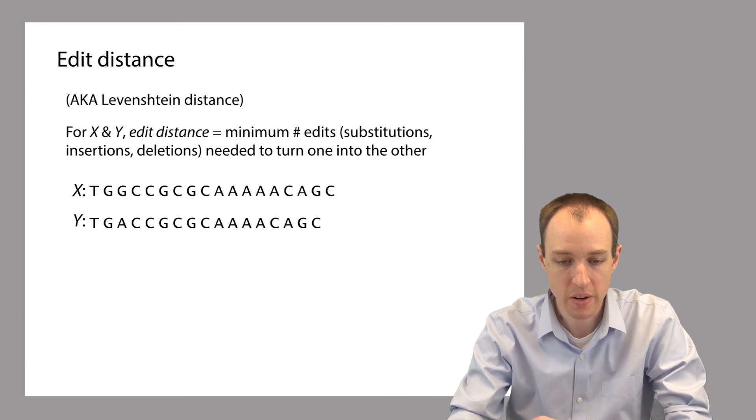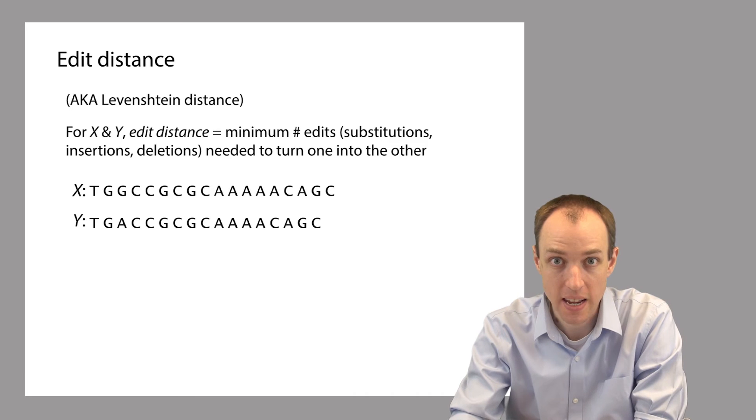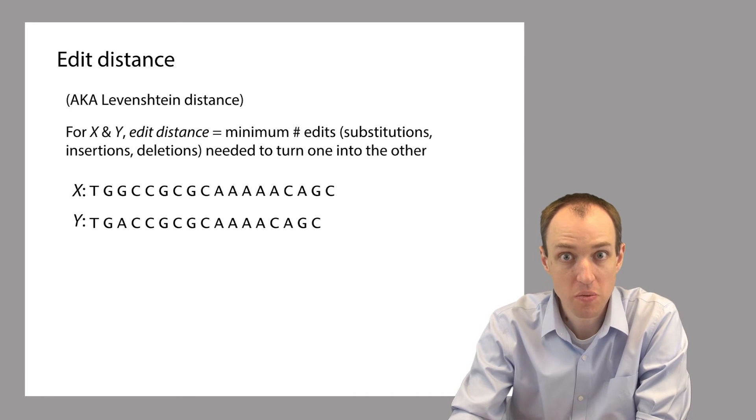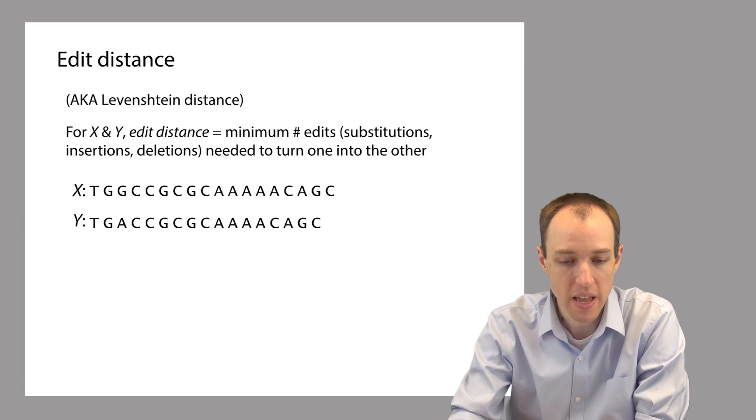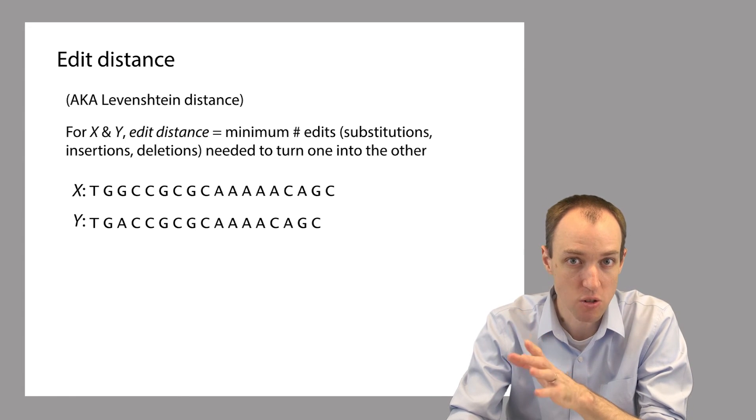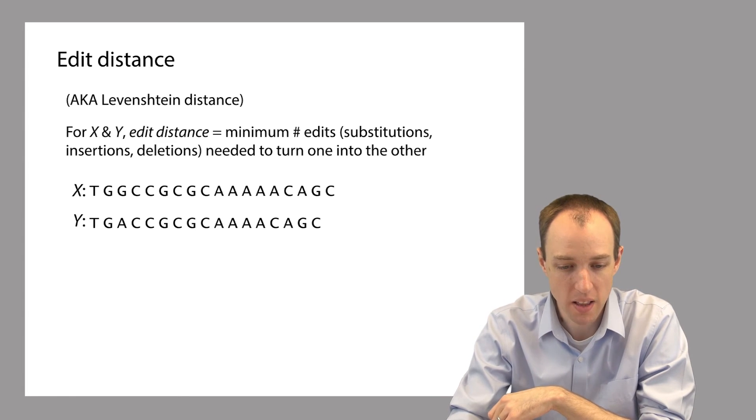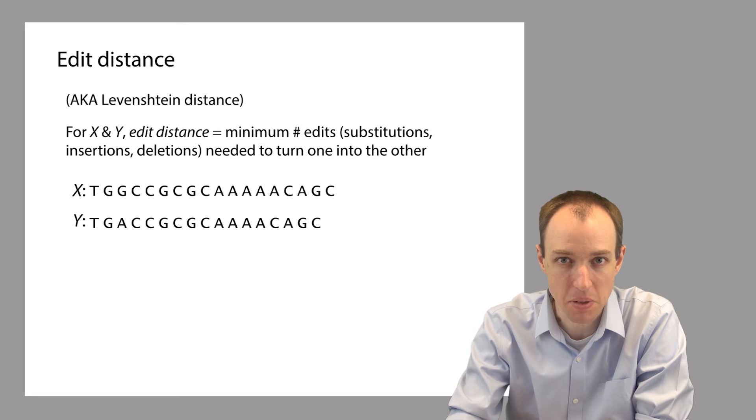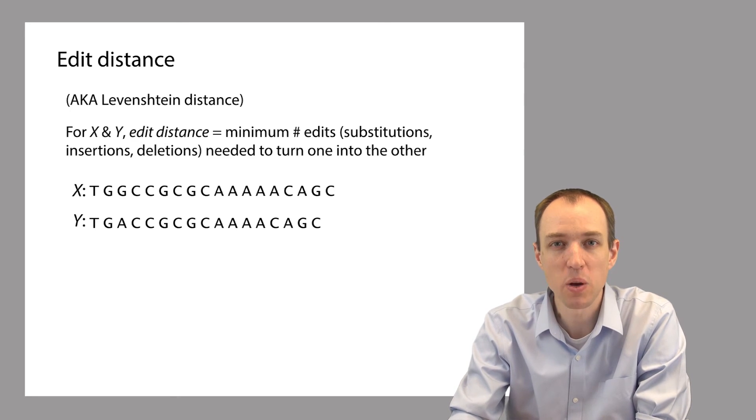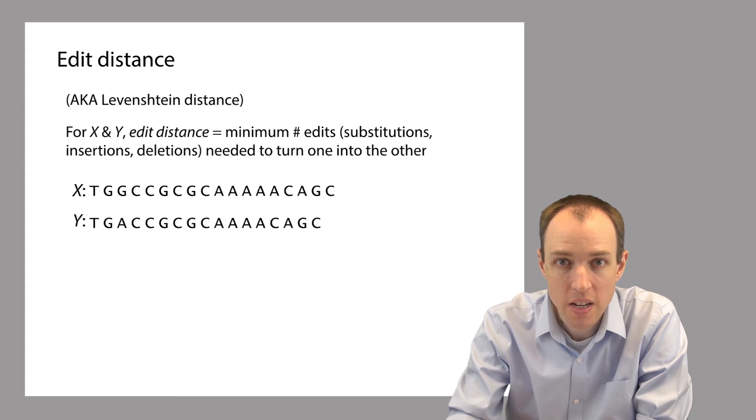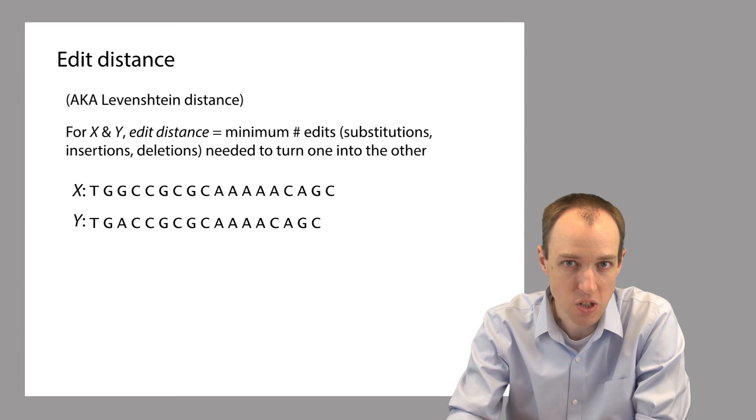Let me point out two important differences between edit distance and Hamming distance. First of all, we're not limited just to substitutions in this case. So with edit distance, we have the option of using insertions and deletions as well as substitutions. The second difference is that x and y are no longer required to be the same length for edit distance. This makes sense because the only way we can make one string longer or shorter is by using insertions or deletions.